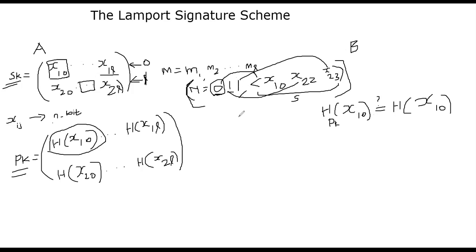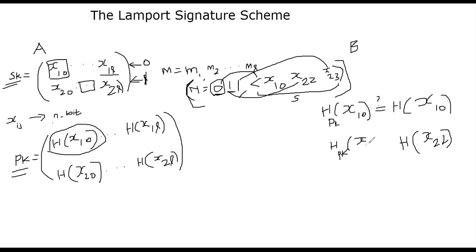For the next bit, the private value is X22. Bob computes hash of X22 and compares against the public key value at the second row, second column — because the second bit is one, so he goes to the second row. He checks whether these two values are equal. If equal, he continues to the next bit. This is how one-time signature verification works, going through each bit sequentially.